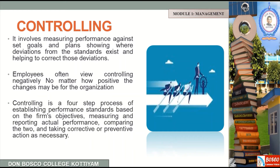Controlling is a four-step process: establishing performance standards based on the firm's objectives, measuring and reporting actual performance, comparing the two, and taking corrective or preventive actions as necessary. You can control the standards, you can measure the standards, and compare standards with performance to determine corrective actions.